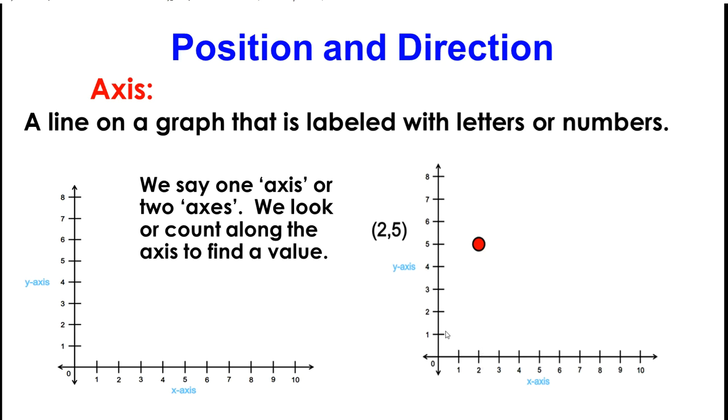And let's see how many I'm going to move up. 1, 2, 3, 4, and 5. Ah, so I found that my ordered pair is 2 and 5.